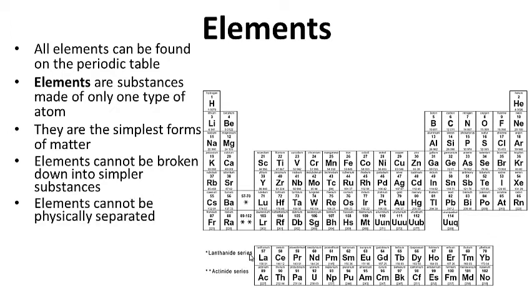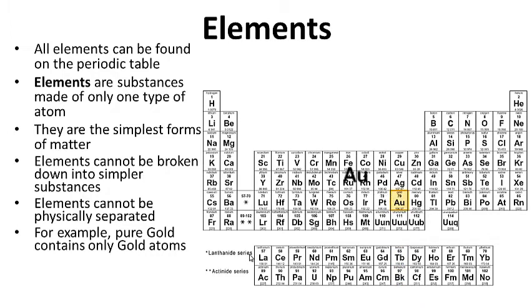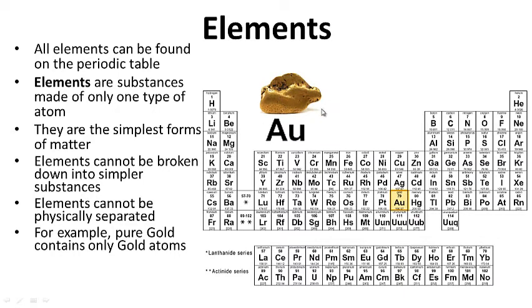Elements cannot be broken down into simpler substances, which means they cannot be physically separated. For example, gold contains only gold atoms, and no matter how hard I try to break gold down into something simpler, I cannot.